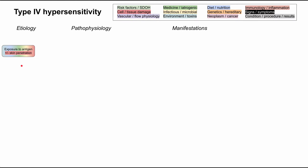What starts the etiology for type 4 hypersensitivity is exposure to antigens. In some cases, you also have skin penetration, such as when you have a poison ivy or poison oak exposure, or maybe exposure to some metals like nickel on a belt buckle. In other cases, the antigen is already in your body through a microbial infection or an autoimmune process. When you have exposure to an antigen, the antigen is taken up into Langerhans cells, which are a type of antigen-presenting cell. Langerhans cells are going to migrate to the lymph nodes, where they'll form sensitized T cells that respond to that antigen.